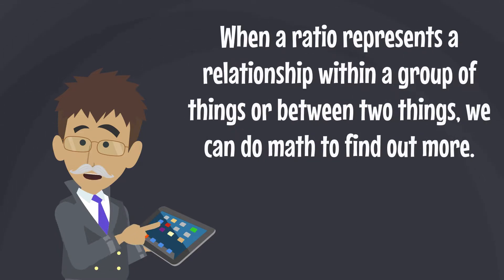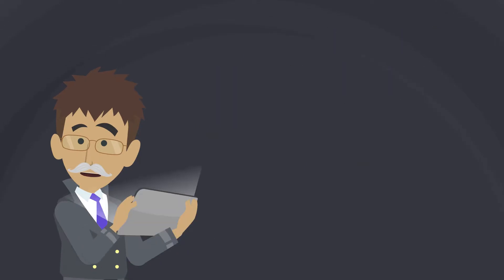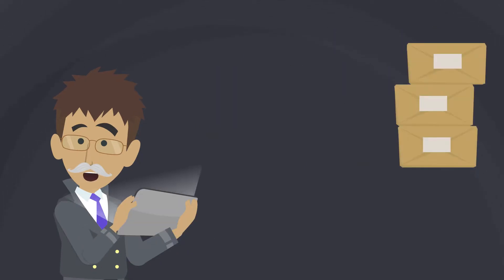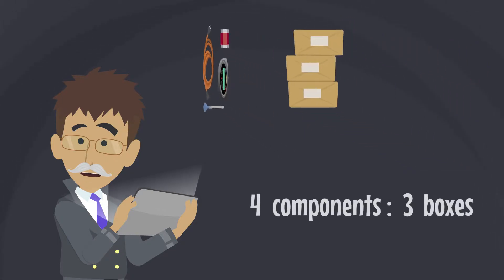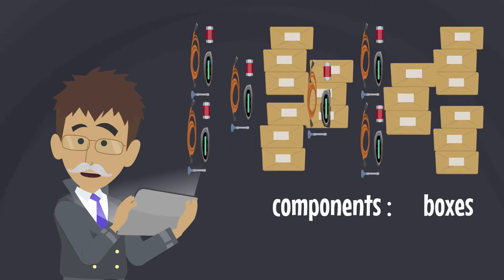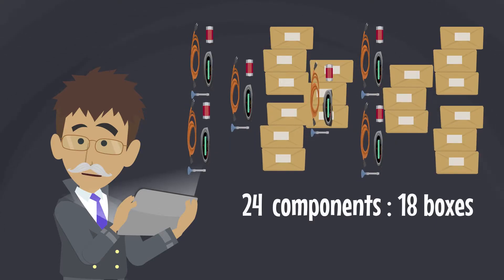One reason we like ratios is that they represent a consistent relationship between things. If we change the total number of things, the relationship between the values stays the same. For example, suppose I know there are four components to three boxes. When we adjust the values of one, the other value changes accordingly. I can change the number of boxes and maintain the same relationship. If I change a value incorrectly, the relationship is no longer correct.